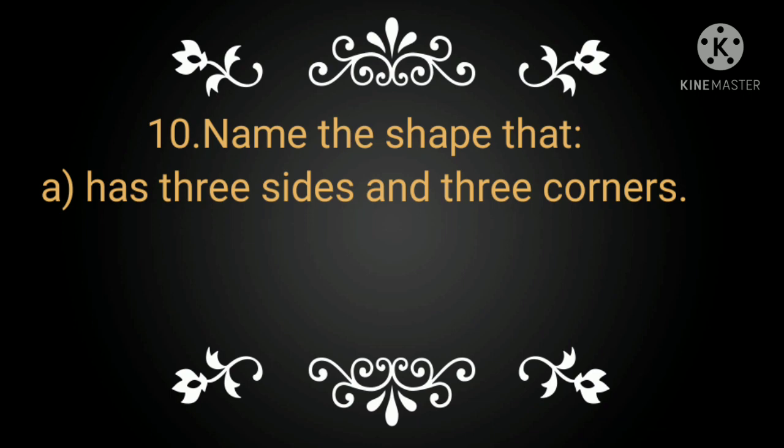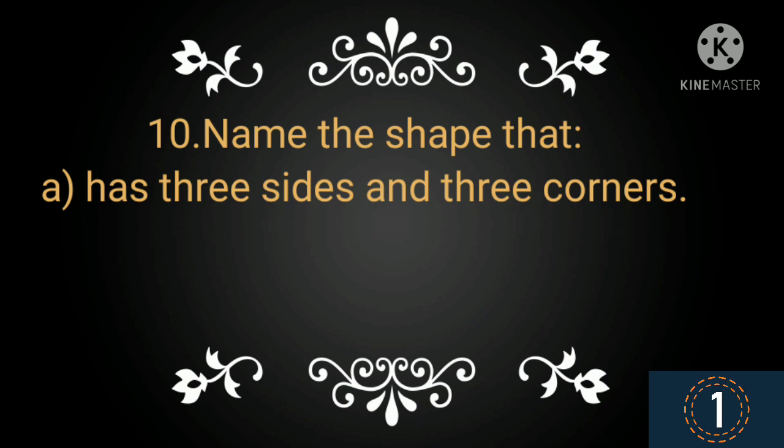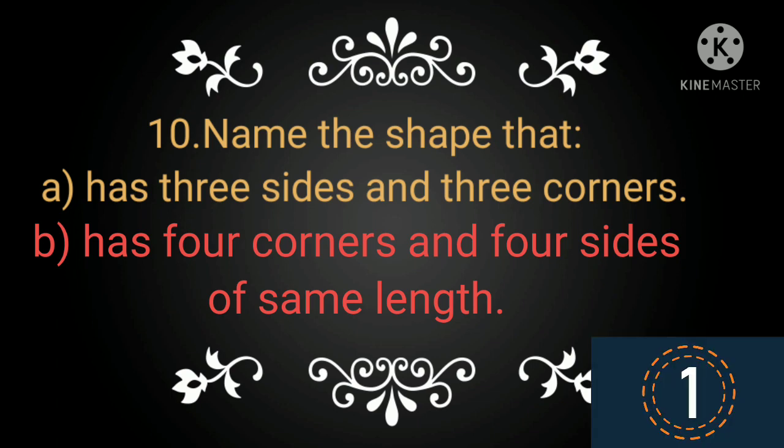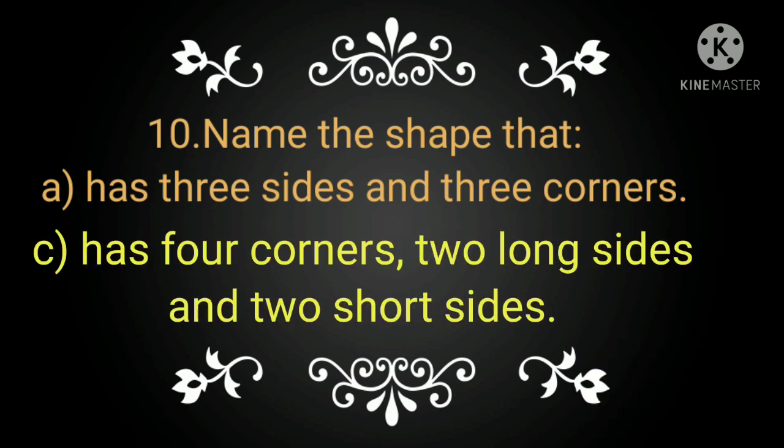Tenth question, name the shape that A has three sides and three corners. Your time starts now. B has four corners and four sides of same length. Your time starts now. C has four corners, two long sides and two short sides. Your time starts now.